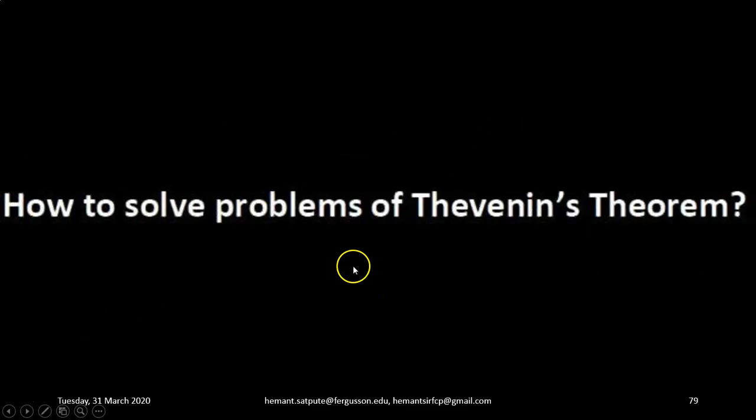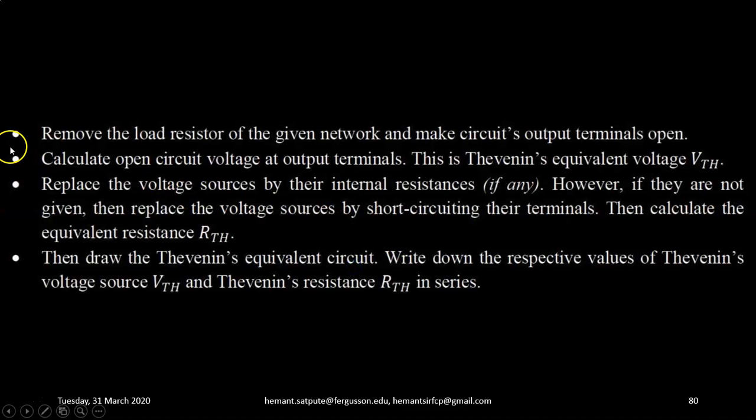Now let us see how to solve problems on Thevenin's theorem. So step 1: remove the load resistor of the given network and make the circuit output terminals open. Then step 2: calculate open circuit voltage at the output terminals. This is the Thevenin equivalent voltage Vth.